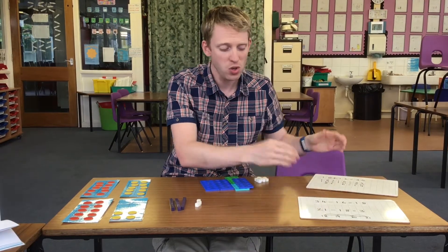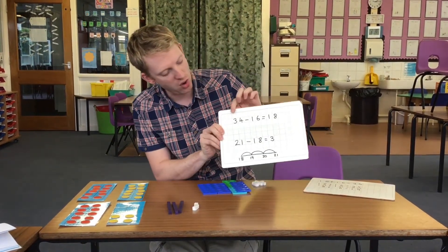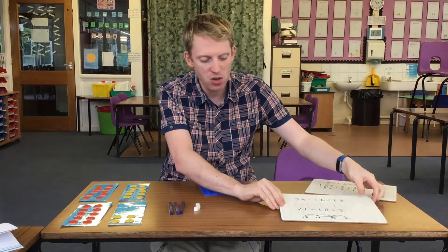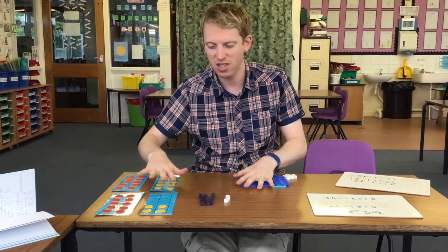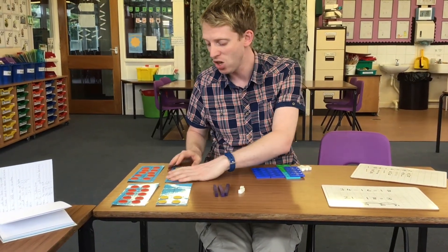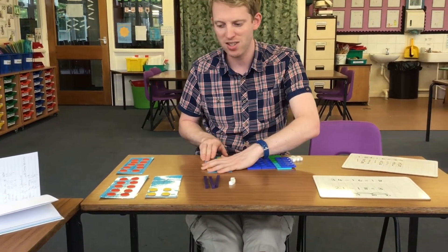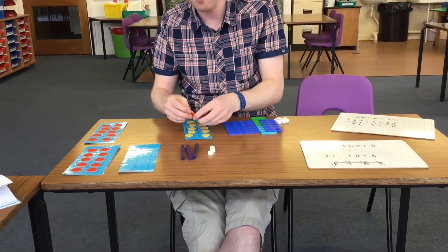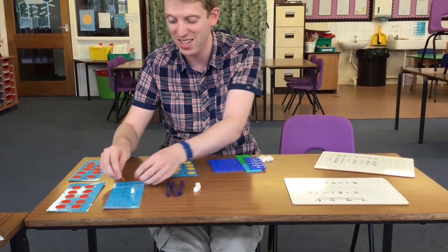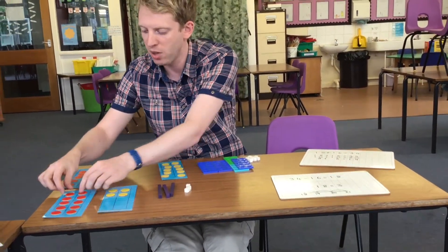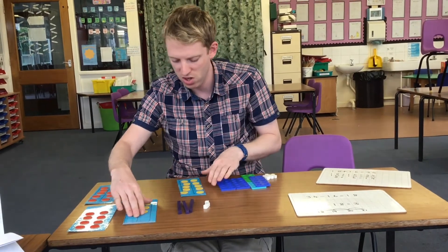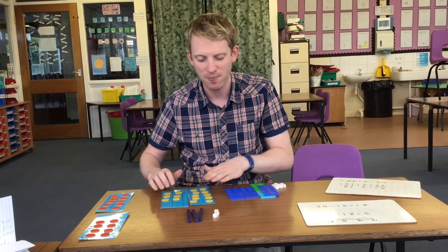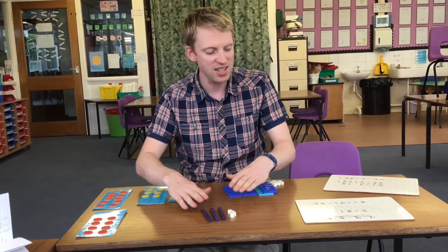Once we've done the addition, we start looking at the subtraction the opposite way. We're going to try 34 subtract 16 to make 18, and we're going to use the tens frame to help us. There's my 34 — I'm subtracting 16, so I'm going to subtract 10 to start off with, then subtract 4 more, and then take away 2 more to make sure I've taken away 16 totally. I move them over so you can see I've taken away that 16 and been left with 18.